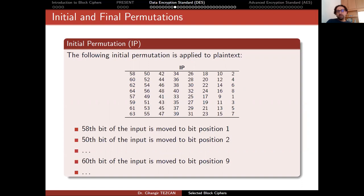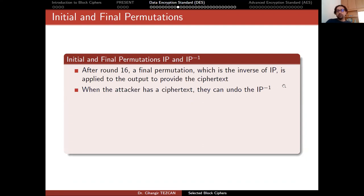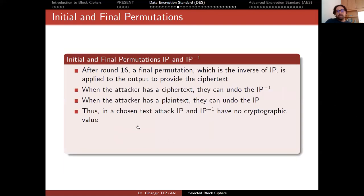The important thing is that this permutation has no cryptographic importance. After round 16, a final permutation — which is the inverse of the initial permutation — is applied to the output to provide the ciphertext. When the attacker has a ciphertext block, they can undo the IP inverse part and perform the final permutation in reverse order. If you have the plaintext block, you can also perform the initial permutation yourself. The attacker can perform this because it has no secret key involved — so you can know the values both before and after. This part has no cryptographic importance. In a chosen-text attack, the initial and final permutations have no cryptographic value.